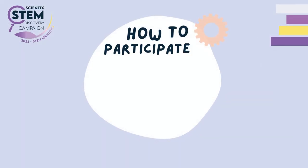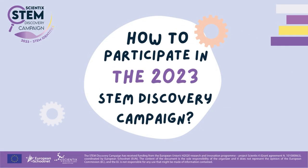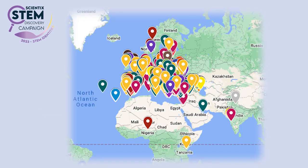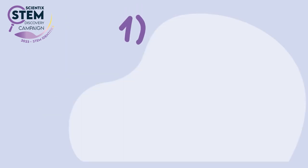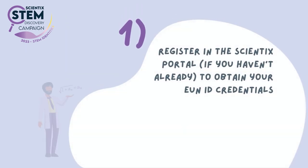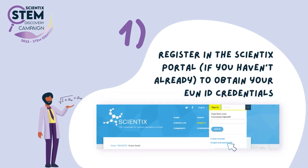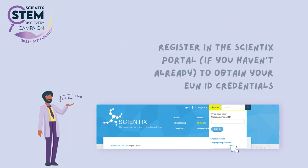This video will explain how to submit your STEM activity to be included on the STEM Discovery campaign map. To submit an activity, you need to be logged into your Scientix account. If you do not have an account, you can create one by clicking Create Account in the login menu on the portal.